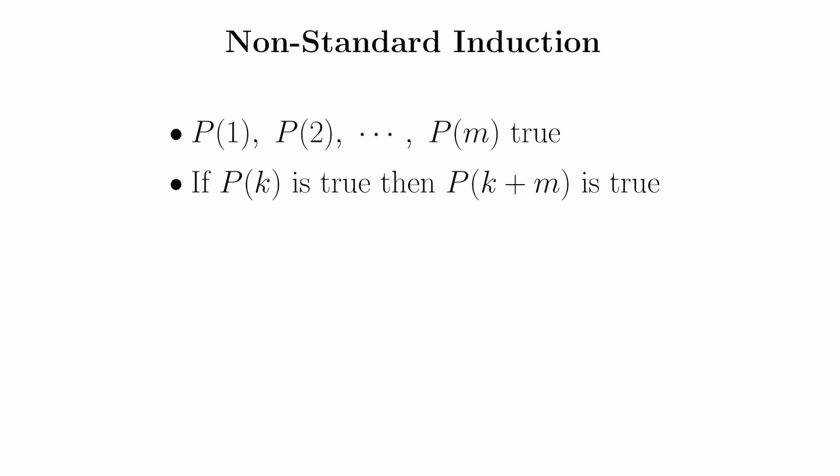I want to show through an example with a particular value of m why that's true. Then we're going to see two applications of this: one to a pretty standard problem and another one to a very interesting problem. Suppose we had m equals 3 and we knew that these two statements were true regardless of what k is.